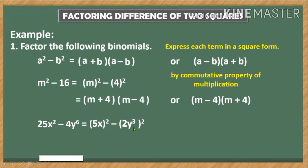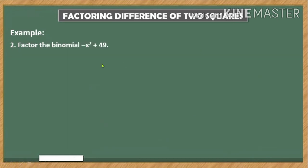So our bases now are 5x and 2y³. To factor, we just simply copy the bases and the operation, doing the same on the other factor. Or we have this expression through commutative property of multiplication.